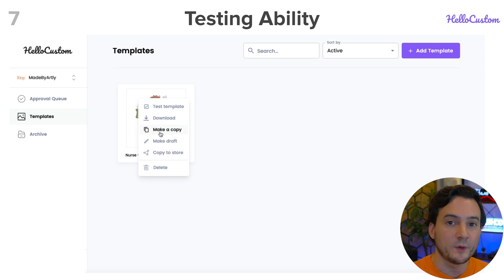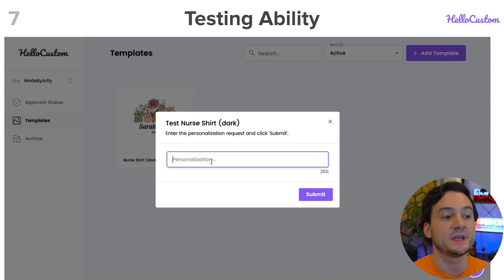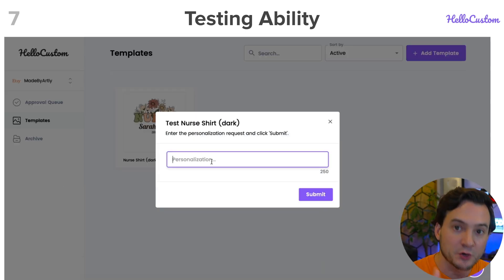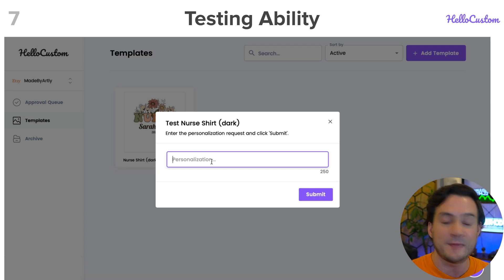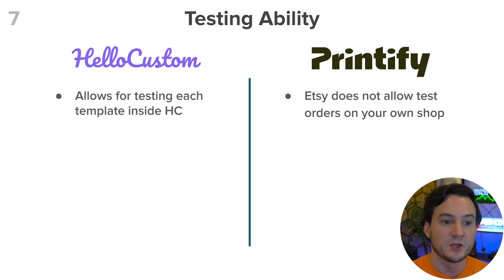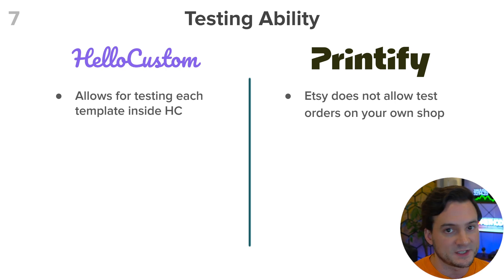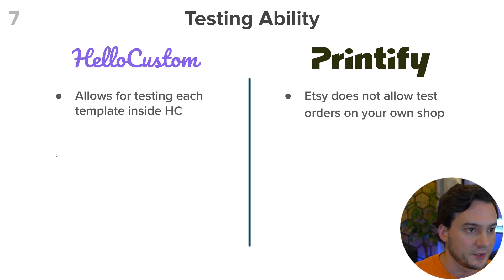Testing your templates is always a good idea. In Hello Custom it's easy — you make a copy in a few clicks, then input your own personalization to see what it would look like and how the AI handles it. Printify does not have a test feature, and Etsy doesn't allow you to test your own orders on your shop. So with Printify you're flying in the dark and need to pay close attention to your order queue when personalized orders come in.